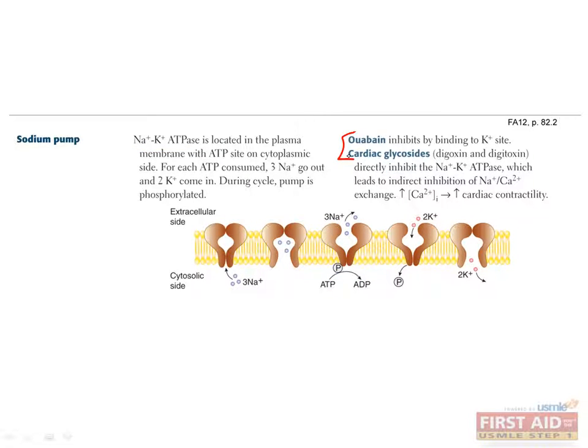There are several drugs that inhibit this process. Ouabain does this by binding to the potassium binding site and is used as a poison by hunters in Somalia. Cardiac glycosides are drugs used for arrhythmias and congestive heart failure, and they include digoxin and digitoxin. These directly inhibit the ATPase activity of the pump, which causes sodium to build up inside the cell, which in turn stimulates the sodium-calcium exchanger, which allows sodium to escape. Ultimately, this increases the amount of calcium inside the cell. More calcium in cardiomyocytes means more cardiac contractility.